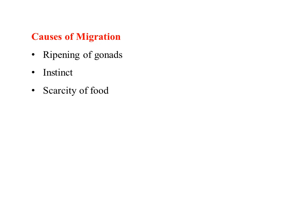Scarcity of food also induces the birds to migrate from one feeding place to another, because when food availability becomes less, they will migrate in search of food to other places. The falling of temperature — changes in temperature — also induces the birds to migrate from one place to another. The shortening of daylight also causes the birds to migrate in search of light.